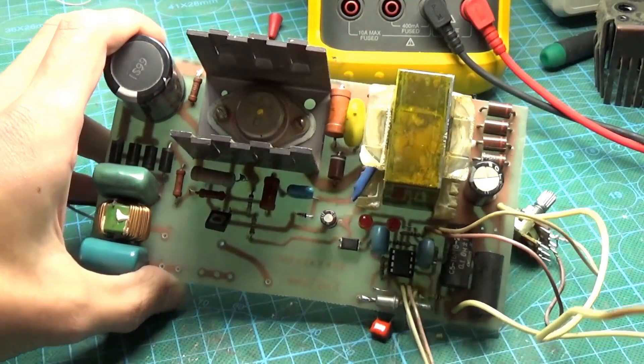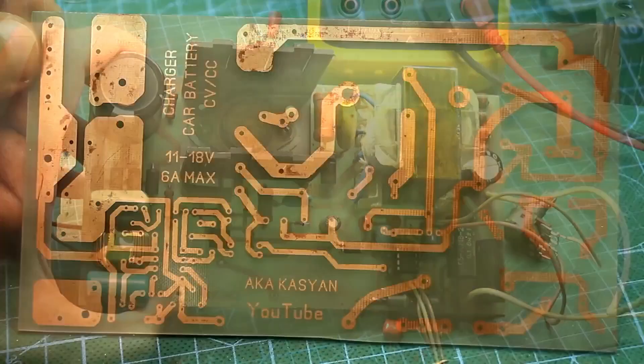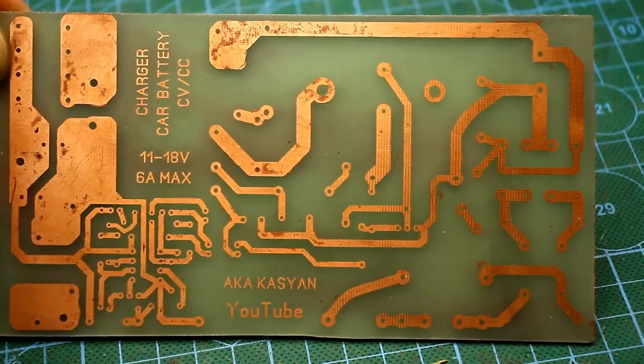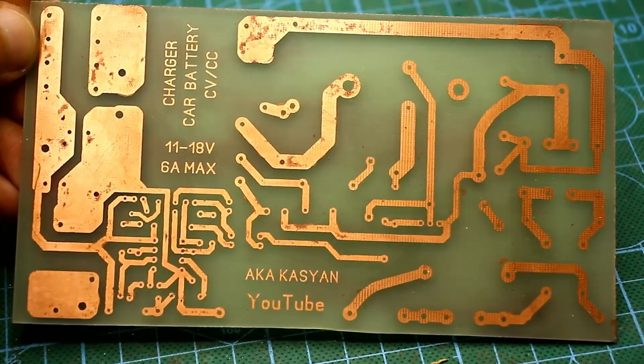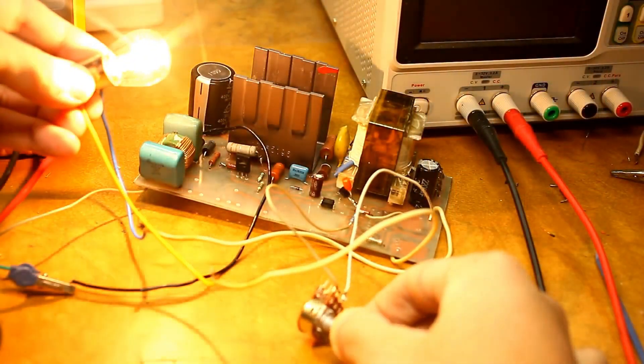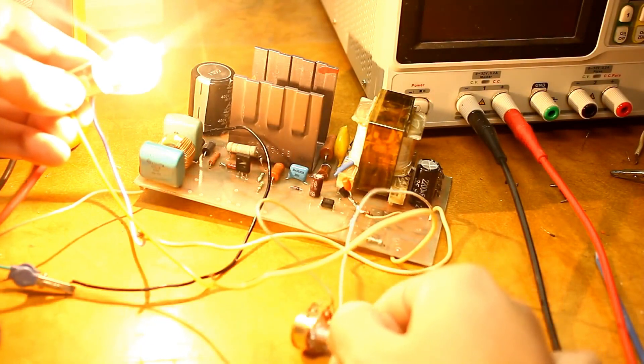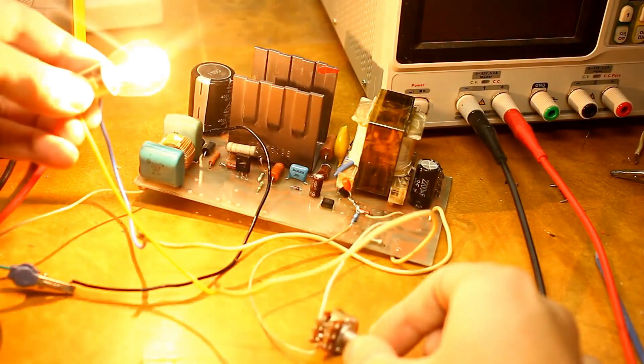We will look at just one construction, but it deserves attention due to its simplicity and might be relevant for many. This is a simple network pulse power supply with output voltage stabilization, and it is built with just two transistors.